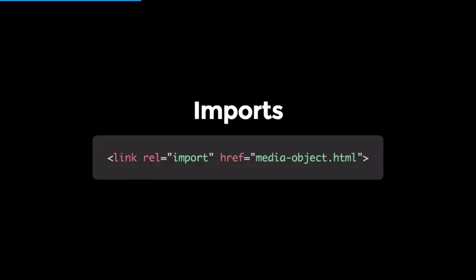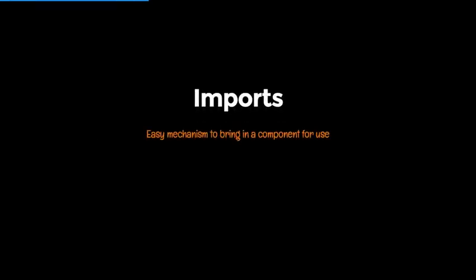Lastly we've got HTML imports, the mechanism that allows us to bring in a custom element. So if I want to use x-reverse on my page I need to import it. It's a nice, simple distribution model — that HTML file can have a whole bunch of resources: it can bring in JavaScript libraries, images, CSS, font files — all in one package.